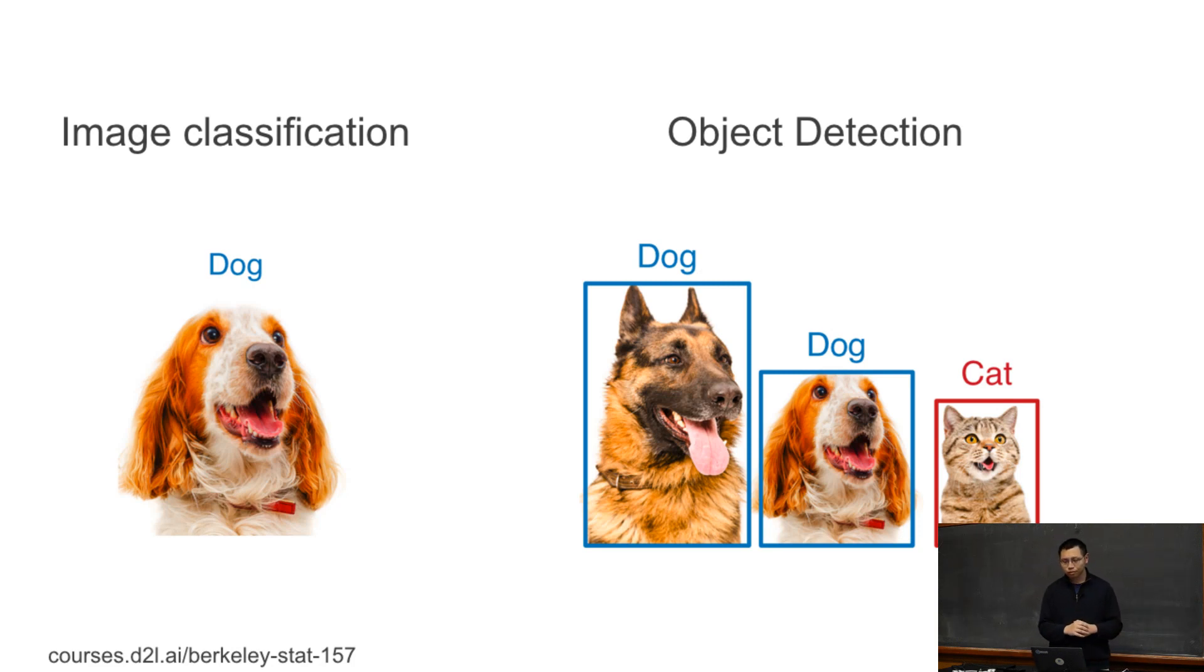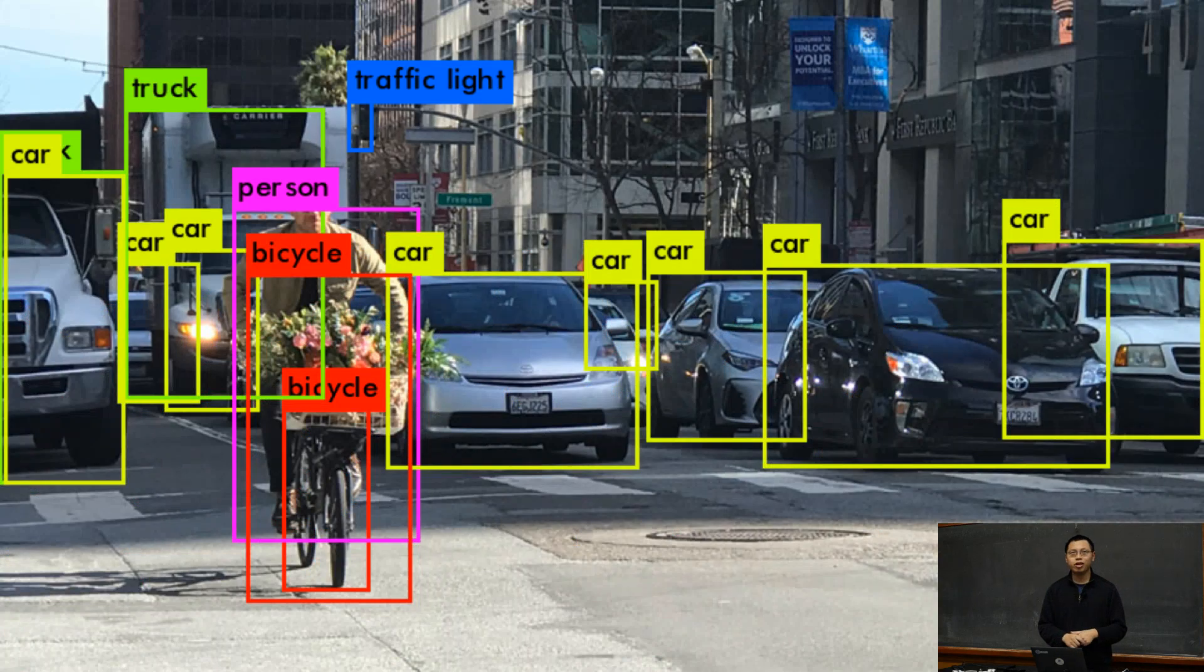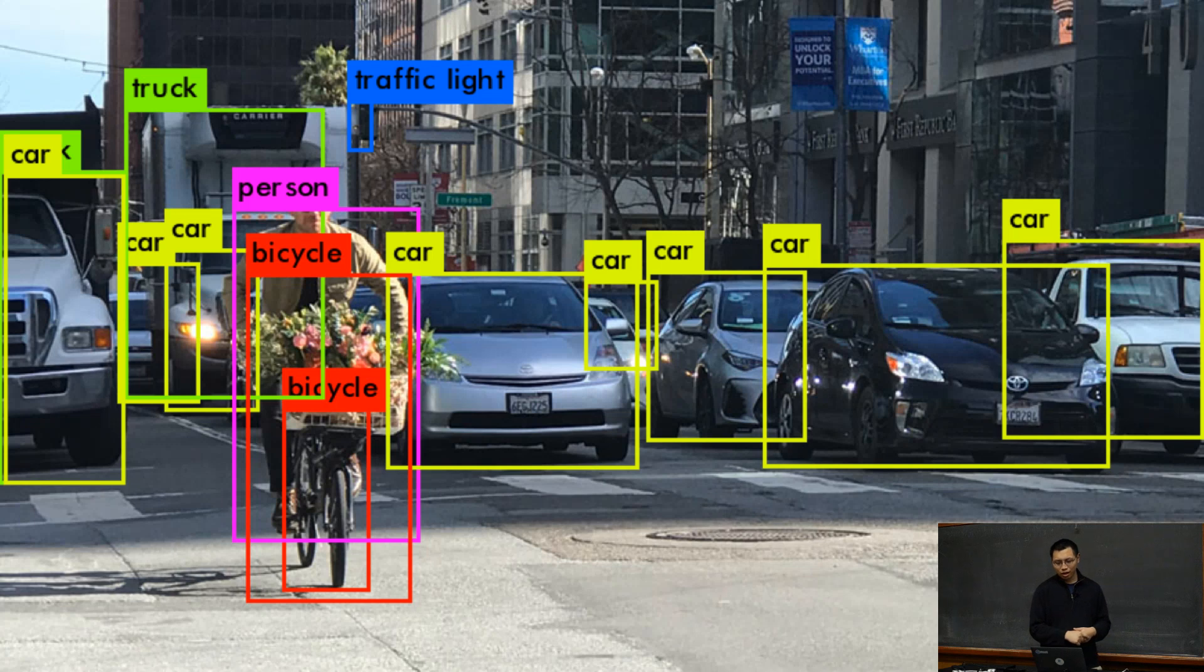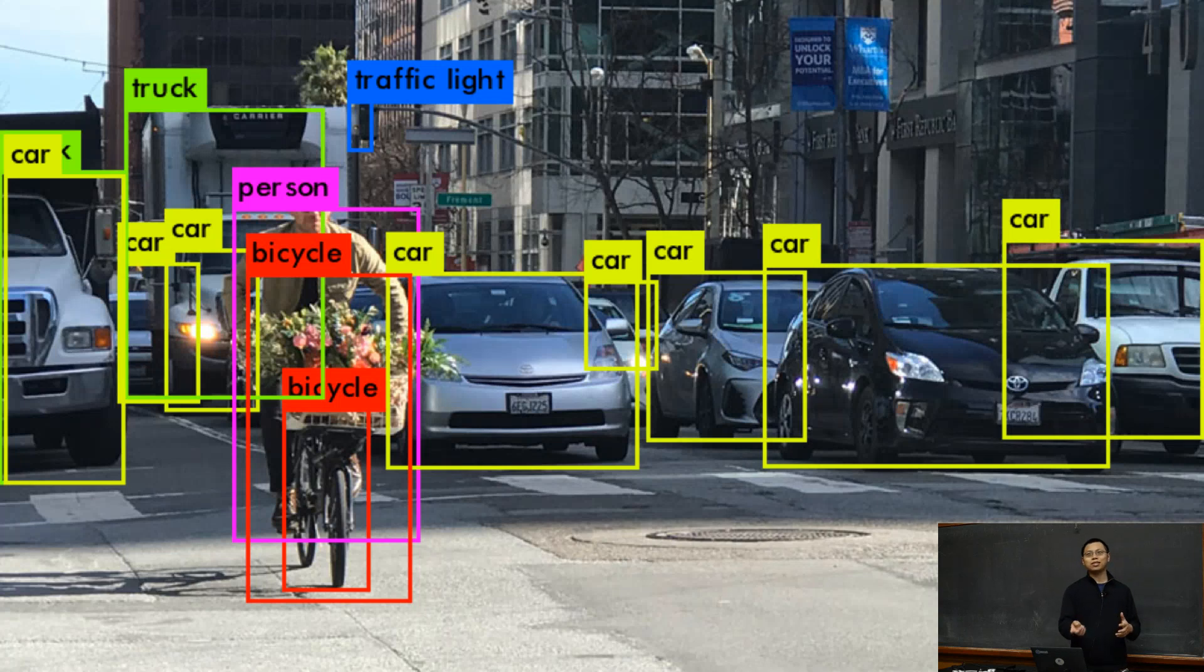This is especially interesting for self-driving cars. You want to take a picture on the street and identify all the cars. You see there's a person, the bicycle, and actually they identify two bicycles here. Also traffic lights. These are the interesting objects we're interested in: cars, humans, traffic lights. There are other objects we're not so interested in, especially for self-driving cars, so we only identify a few objects.